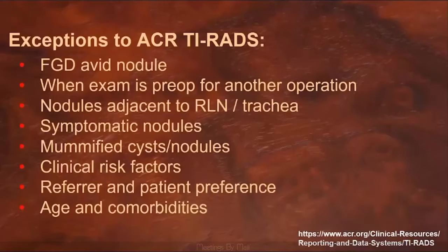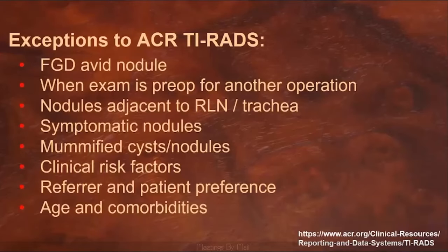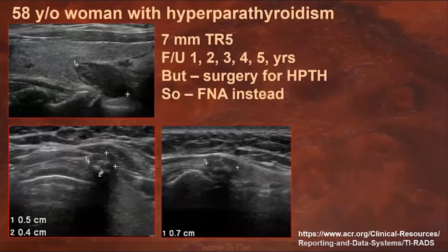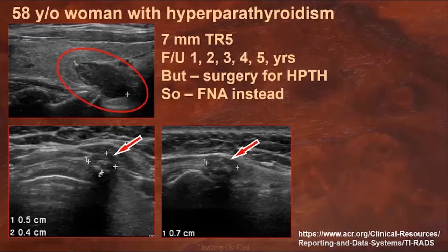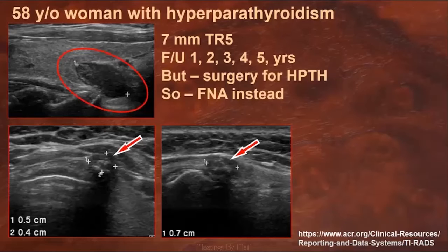There are nine lectures available on the ACR website that answer questions submitted by users and address many other issues you might encounter. One lecture includes a discussion of exceptions to our usual recommendations, including nodules that are FDG-avid, nodules found when doing preoperative exams for other reasons, nodules in critical locations, and a variety of other situations. For instance, this is a patient with hyperparathyroidism who has a parathyroid adenoma, but also has a 7-millimeter TR5 nodule in the isthmus that would usually be followed. But the surgeon is going to be right there in the OR, so it just makes sense to do a pre-op FNA, and if the nodule is positive, to do the thyroid surgery at the same time as the parathyroid surgery.